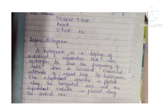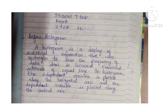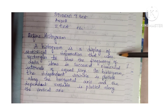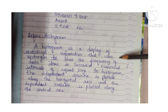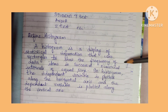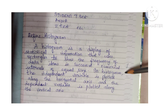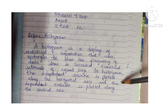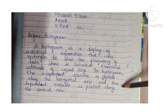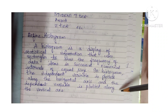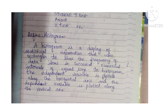Define histogram. A histogram is a display of statistical information that uses rectangles to show the frequency of data items in successive numerical intervals of equal size. In a histogram, the independent variable is plotted along the horizontal axis and the dependent variable is plotted along the vertical axis.